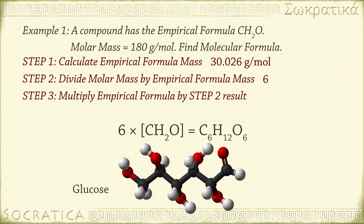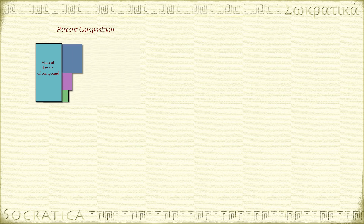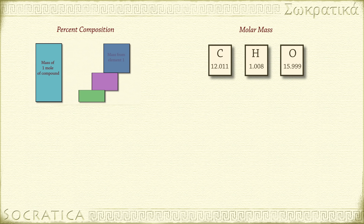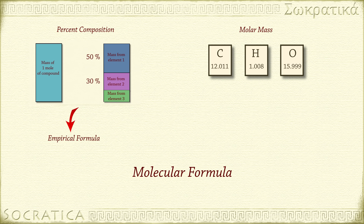This is glucose. So now we know three compounds that have the same empirical formula but different molecular formulas. For our next example, let's work a problem all the way through from the percent composition data and the molar mass to get the molecular formula. This means we will first find the empirical formula and then go on to find the molecular formula.